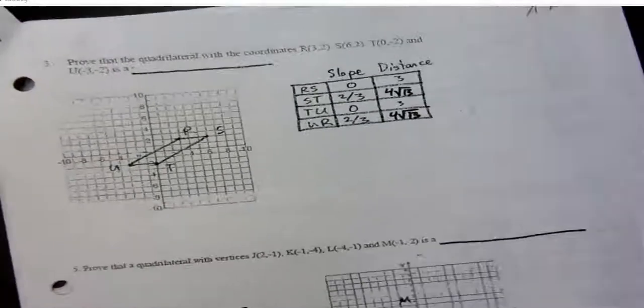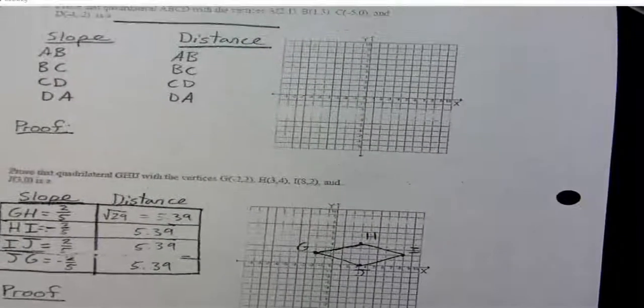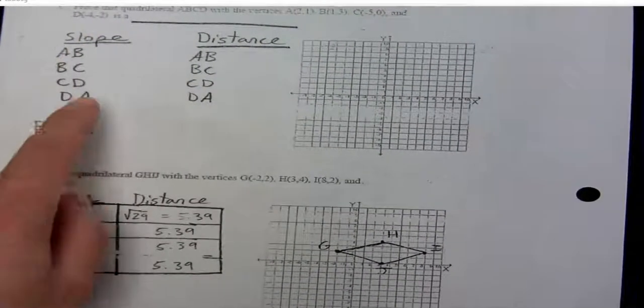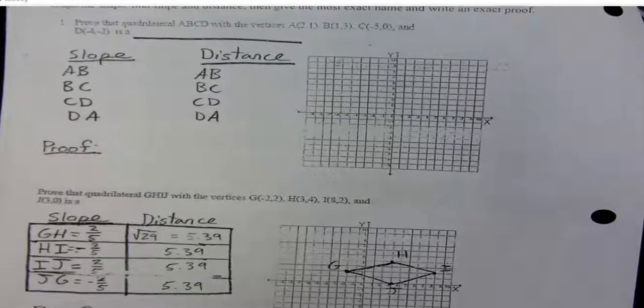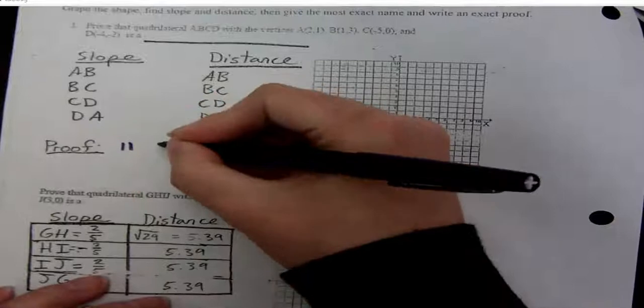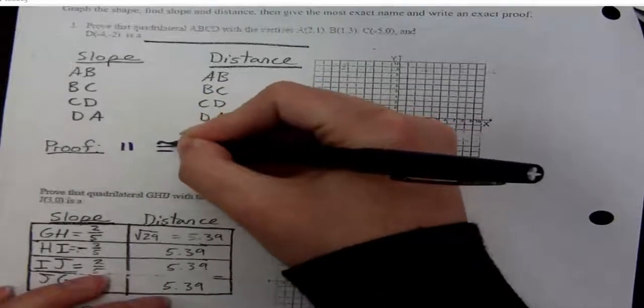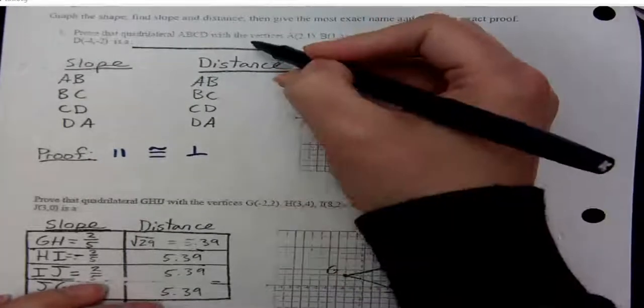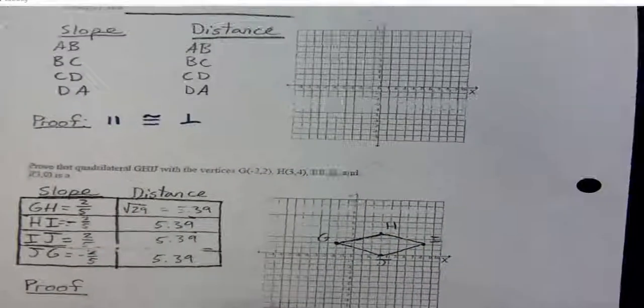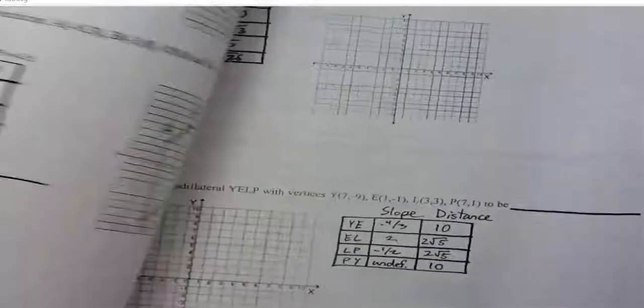For your assignment, which looks very similar to the open-note test next class, you have to find the slope and distance of four points, figure out which sides are parallel and which are congruent, note any perpendicular sides, and then determine what shape it is. Most problems already have slope and distance given. Work through the pages carefully, because your test will look similar to this.